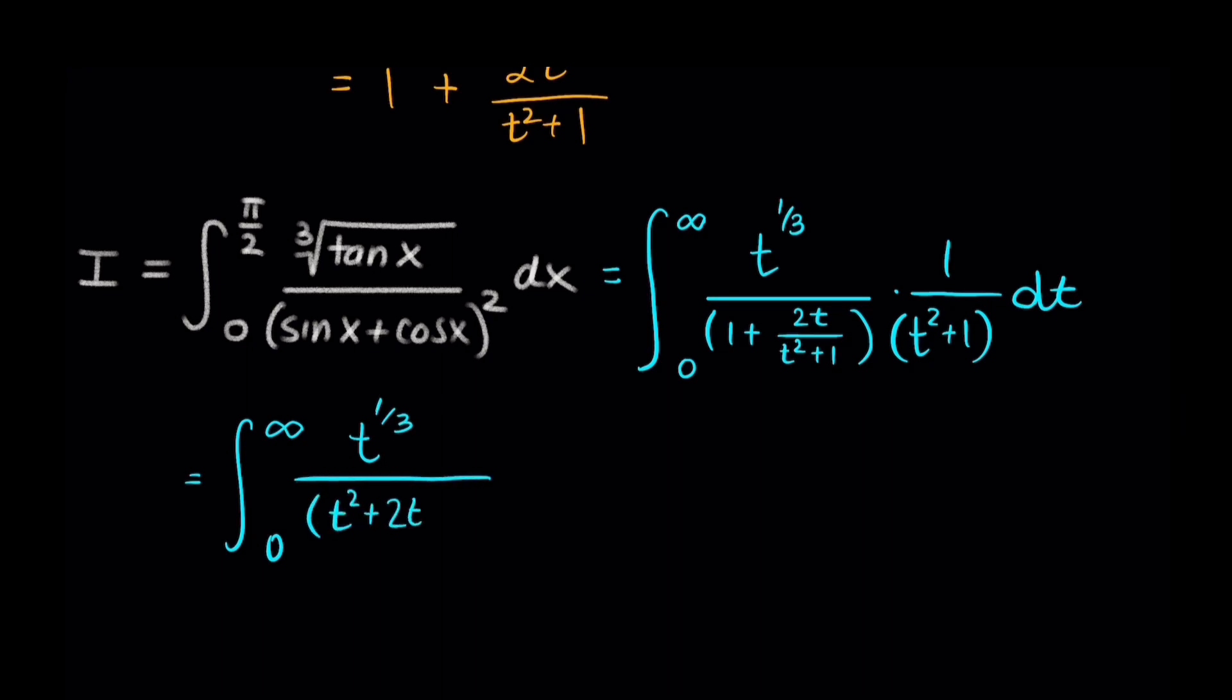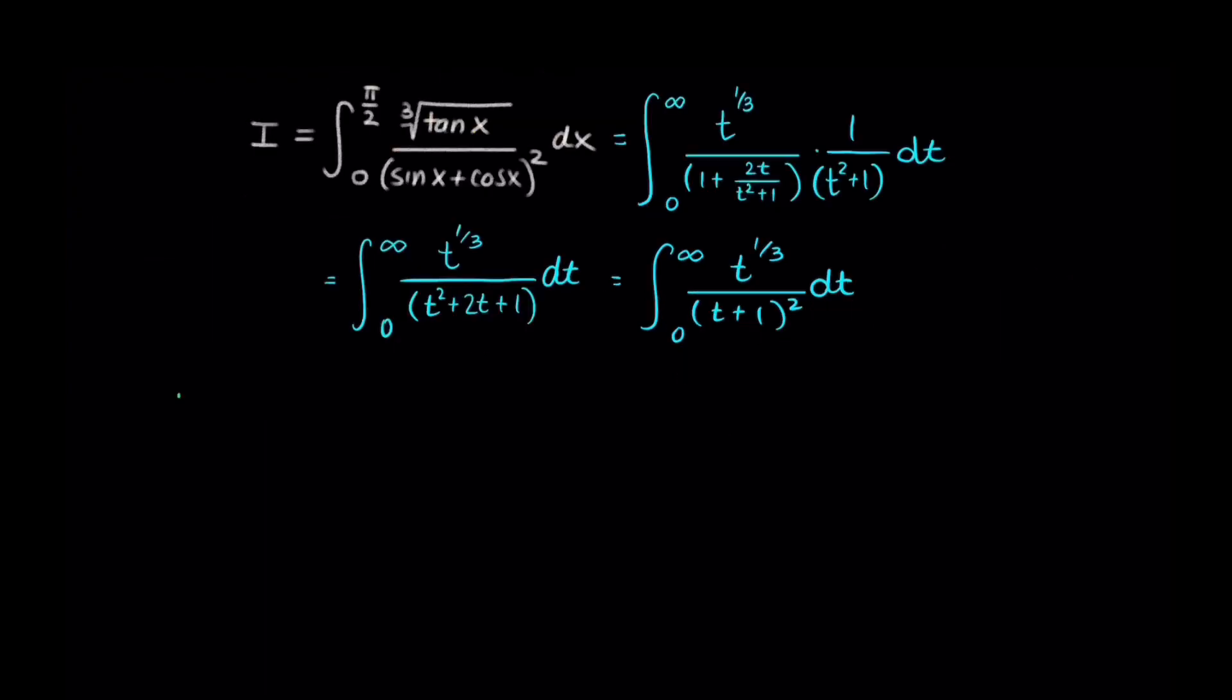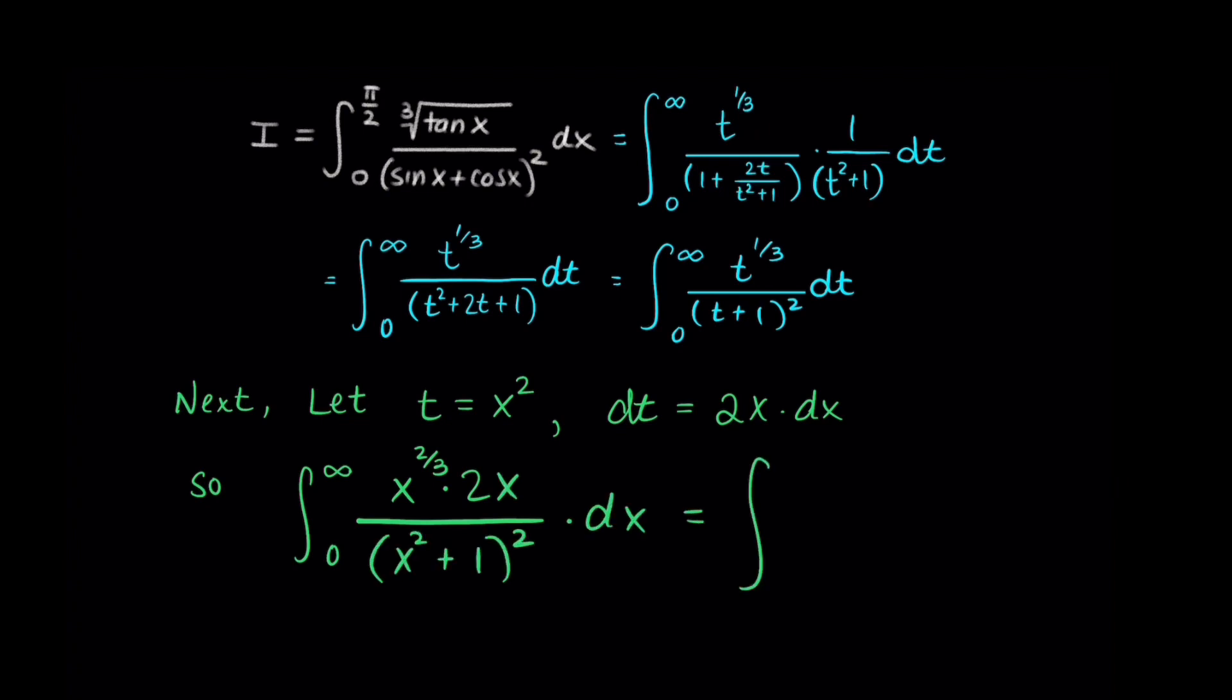And, when you multiply through the denominator and simplify that, you get a denominator of t squared plus 2t plus 1, which also factors nicely into t plus 1 squared. Now, if I had used this integrand and went right into the complex plane, it would be a little more difficult because the pole would lie on the real axis. So, rather, we're going to make another substitution here, and let t equal x squared. dt would then be 2x dx. And, substituting into the integrand, and doing some algebraic manipulation with the exponents, we get 2x to the 5 thirds over x squared plus 1 quantity squared dx.